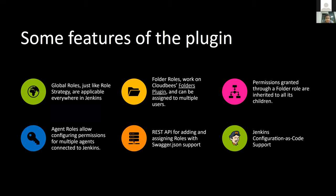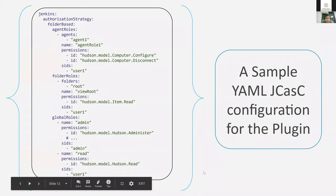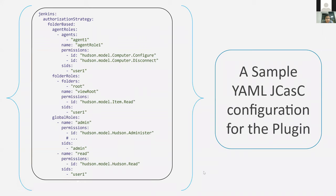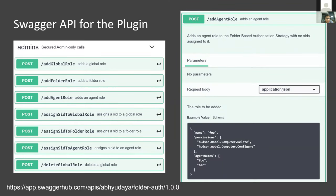What we introduce here are folder roles, which work on folders from the Folders plugin. Permissions granted on a folder are inherited by all of its children. Agent roles allow configuring permissions for multiple agents connected to Jenkins. We also have REST APIs for managing roles with Swagger JSON support, and we support Jenkins Configuration as Code out of the box. This is what a typical Configuration as Code setup looks like, and the Swagger API is available through SwaggerHub where you can download client stubs for multiple languages.